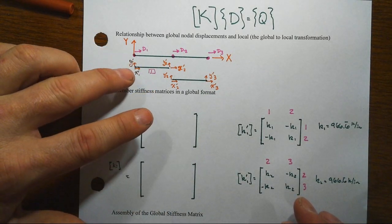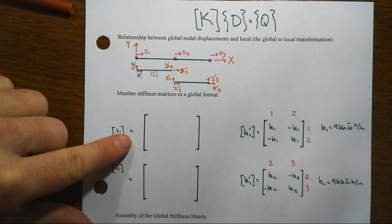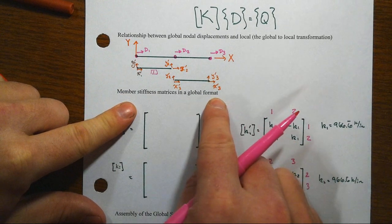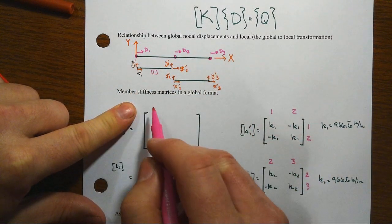Now in the big global format we got one, two, three degrees of freedom here.